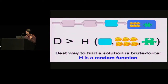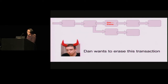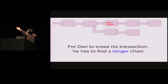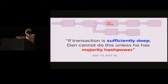It's very important that honest nodes believe in the longest chain if they see multiple forks. Imagine our adversary Dan purchases a car from Elaine, receives the car, and now wants to erase this transaction to double-spend his money. He can mine a longer chain than the main chain. But the intuition is that if the transaction is buried deep enough in the blockchain, Dan cannot successfully mine a longer chain unless he has the majority of the hash power. This intuition has been formalized in earlier works, for example, the elegant work of Gray et al. and Pass et al.